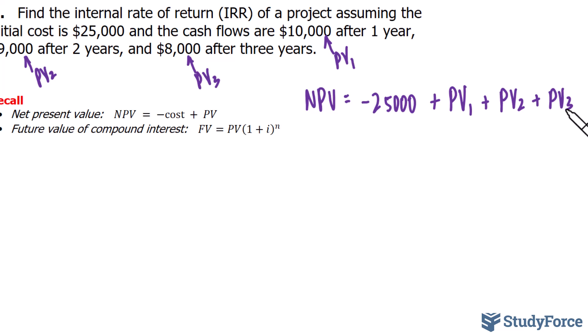Now when we're calculating the internal rate of return, the net present value must equal to zero. So I'll replace NPV with zero, and now all we have to do is find the expression for PV1, PV2, and PV3.